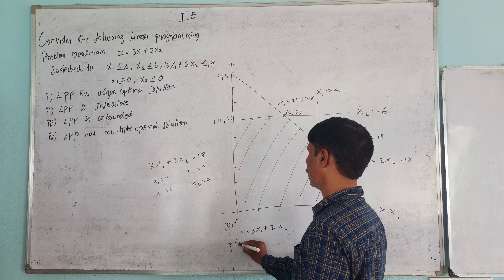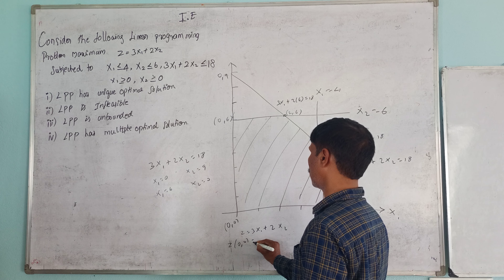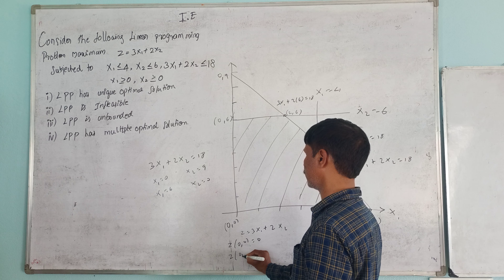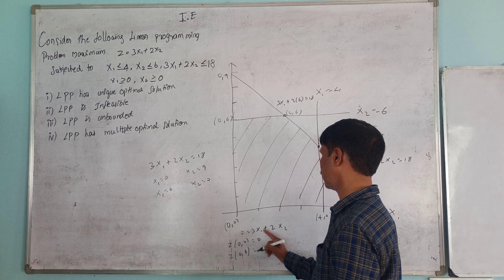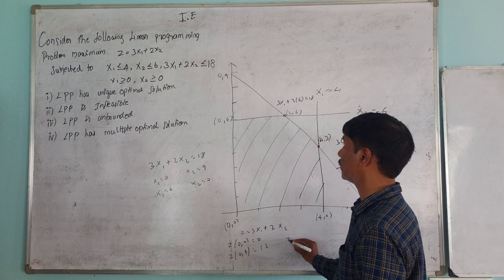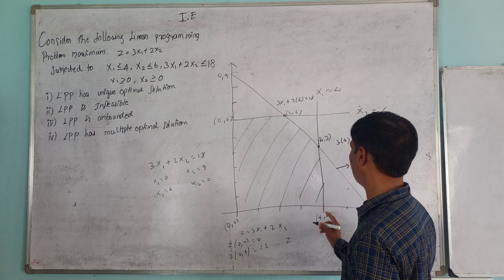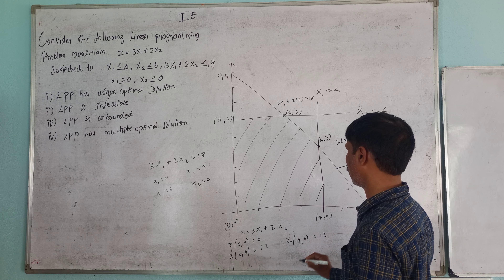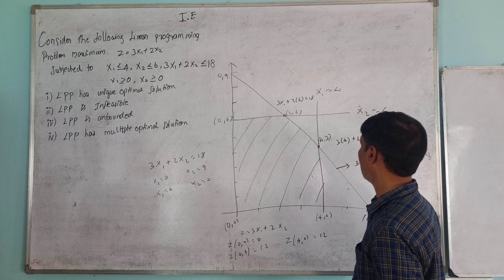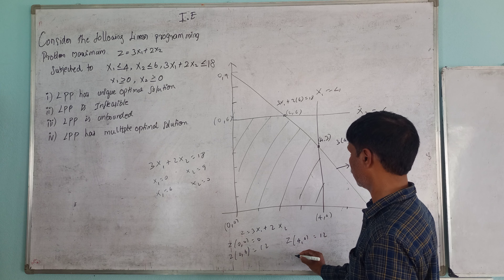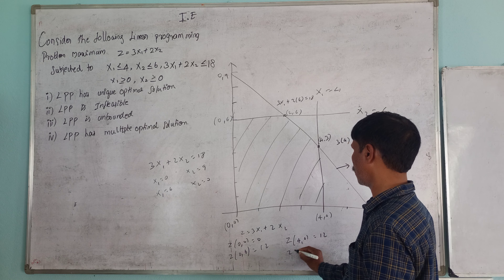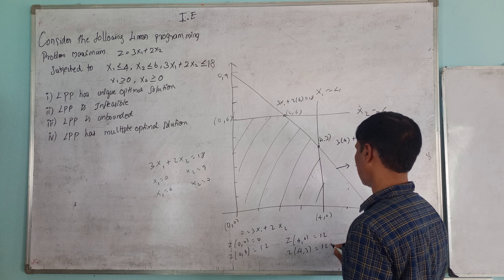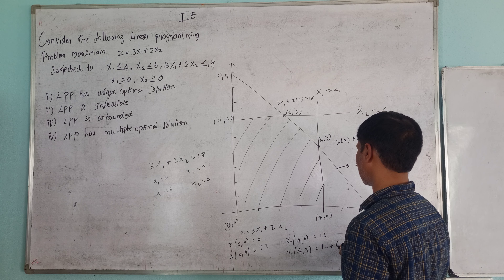Evaluating the objective function Z = 3x1 + 2x2 at the corner points: At (0, 0), Z equals 0. At (4, 0), Z equals 12. At (4, 3), Z equals 18. At (2, 6), Z equals 18.